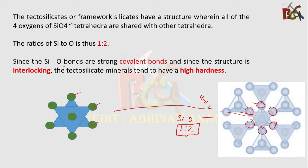Since the Si-O bonds are strong covalent bonds and the structure is interlocking, tectosilicate minerals tend to have high hardness. Because this is an interlocking structure, it's also known as a 3D framework. Due to this structure, it has uniform properties throughout the crystal or mineral.